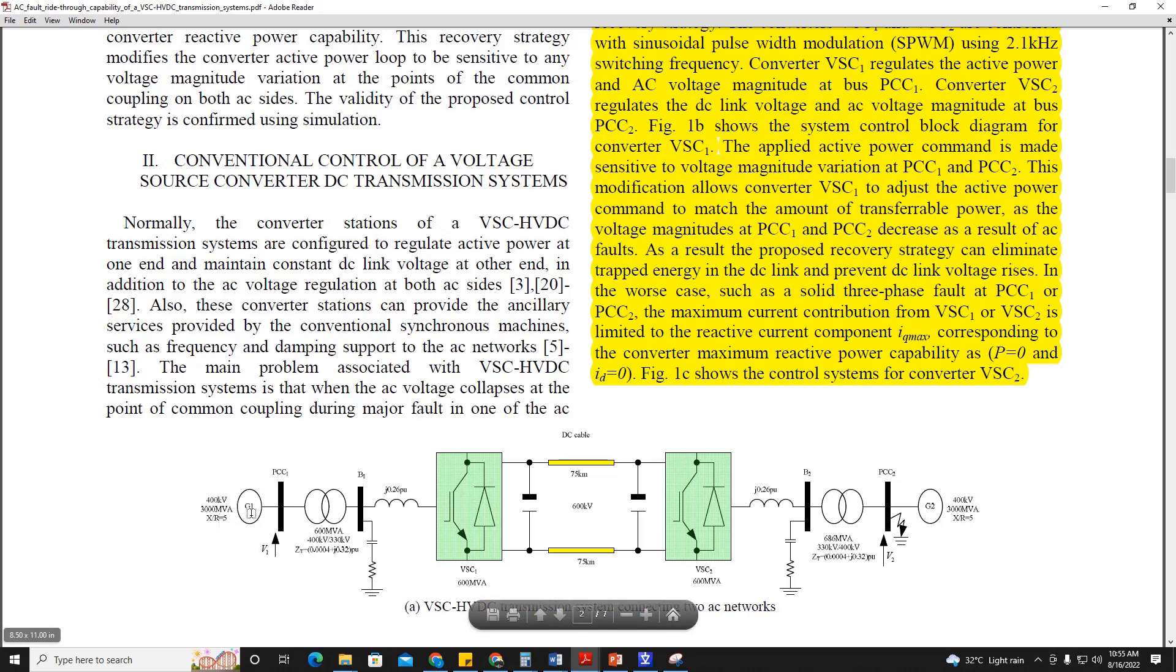So power reduction technique will happen in this case. Here the surplus power will be reduced in order to ensure that DC voltage overvoltage is not happening at the DC cable. This applied active power command is made sensitive to voltage magnitude variation at PCC1 and PCC2. This modification allows VSC1 to adjust active power command to measure the amount of transfer power as the voltage magnitude at PCC1 and PCC2 decrease as a result of AC faults.